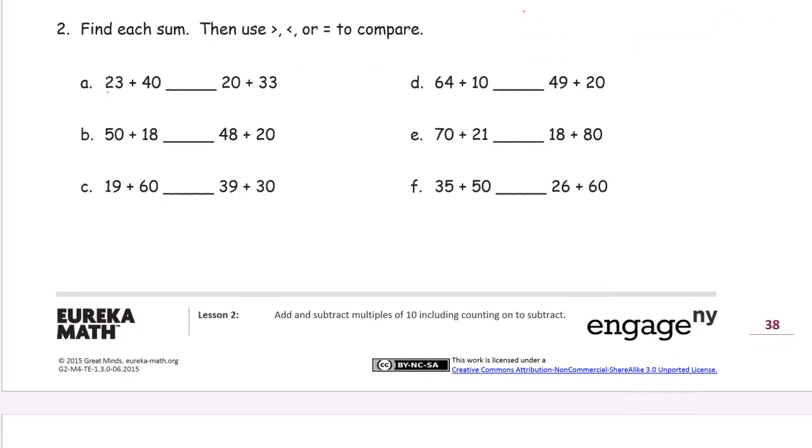Now we're finding sums, and we're using greater than, less than, or equal to to compare. If you can't remember which one is which, then think of the old reliable alligator eats the bigger number, there's my little alligator. Alligators are hungry, so it's a hungry alligator. And it always wants to eat the bigger number. So the open end of the mouth is going to face the larger number.